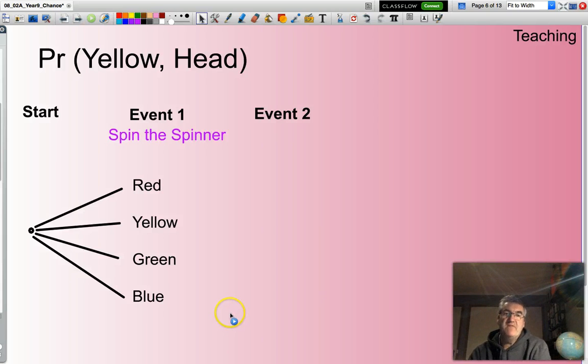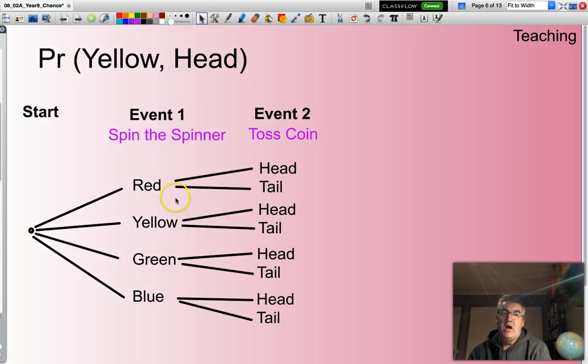However, we have a second event to consider. That event is tossing the coin. And when I toss the coin, I could consider that I have either a head or a tail.